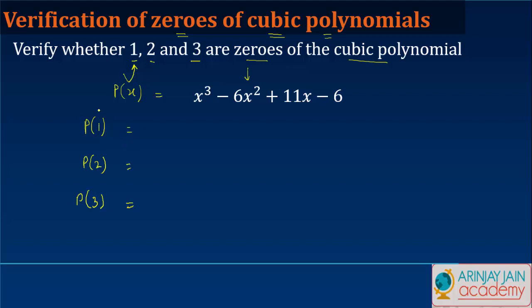So what we do is simply put in the value of 1 at every place where x appears. So we have 1 here. What will we have? 1³ - 6(1²) + 11(1) - 6, which is 1 - 6 + 11 - 6, which equals 0.